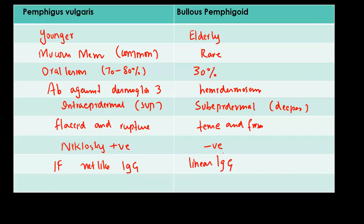Keep in mind that Pemphigus Vulgaris is fatal without treatment, whereas patients with Bullous Pemphigoid have a good prognosis and they do well.